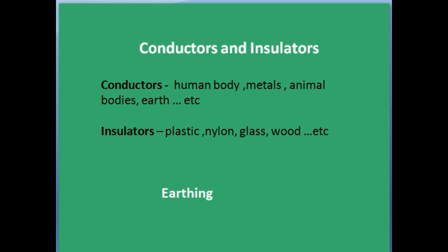Charges placed on the surface of a conductor get distributed over the entire surface. With insulators, charges remain at the same place. When a charged body is in contact with earth, all excess charge disappears by causing a momentary current to pass to the ground. This process is called grounding or earthing. Earthing provides a safety measure for electrical circuits and appliances. Let's move on to induction.